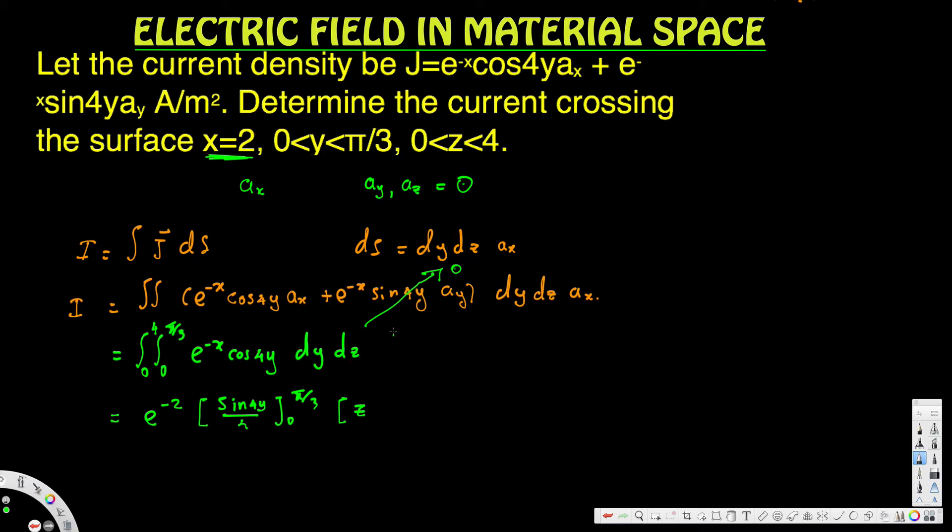...if we integrate dz, that's just z going from 0 to 4. After we simplify, I is equivalent to e to the negative 2 times sin of 4 times 5 divided by 3.